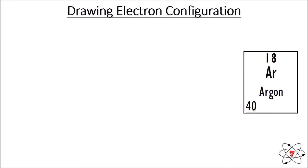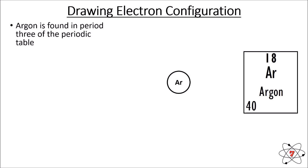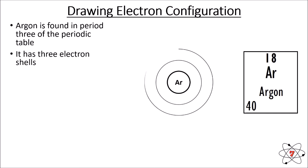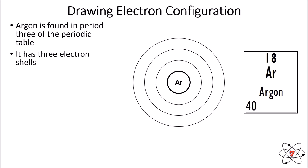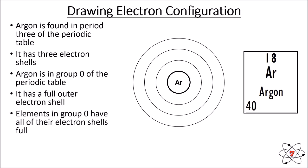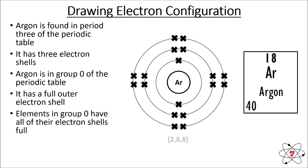Looking at another example — argon. We draw Ar. Argon is found in period three of the periodic table, which means it has three electron shells, so we draw those empty shells. Argon is in group 0 of the periodic table, which means its outer electron shell must be full, so we draw eight electrons. Elements in group 0 always have their outer shell completely full. So: two electrons in the first shell, eight in the second, eight in the third. The electron configuration is 2, 8, 8. Adding these up gives 18, which equals the atomic number — so argon has been drawn correctly.